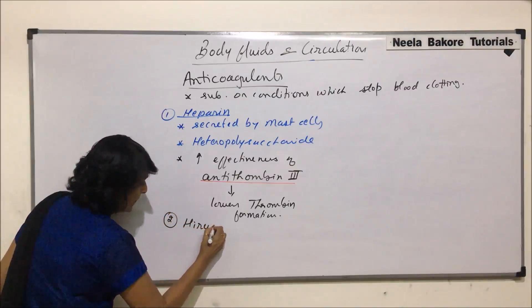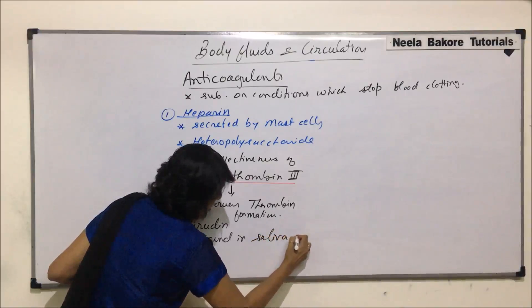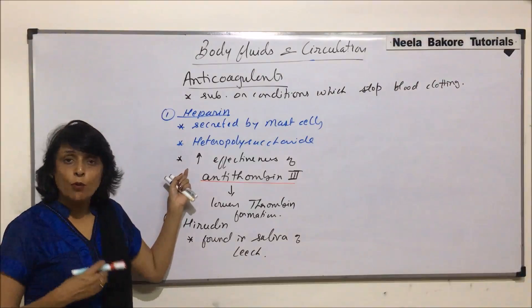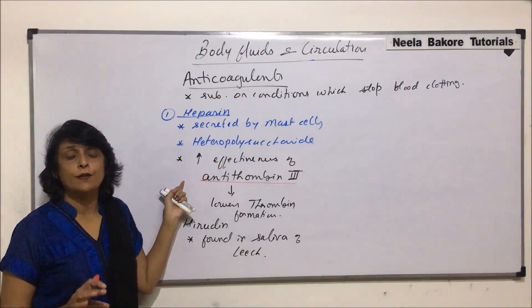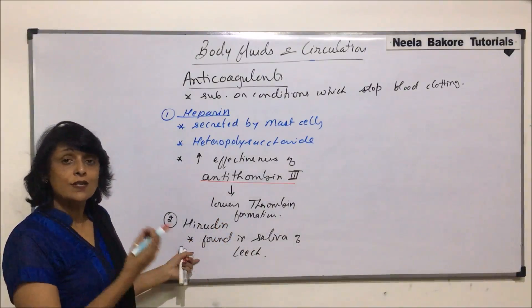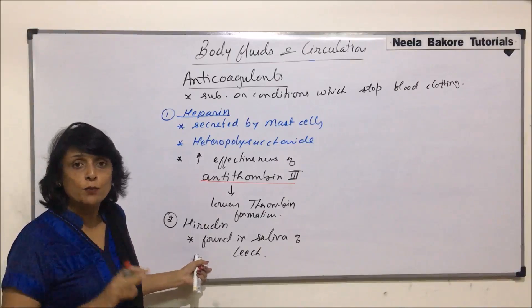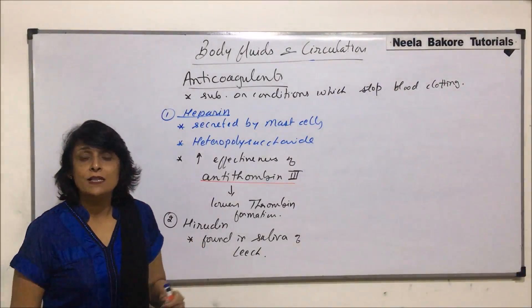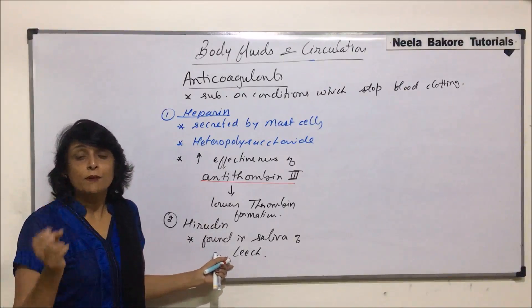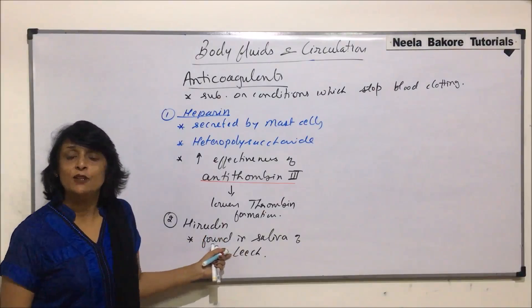The second anticoagulant is hirudin. It is found in the saliva of leeches and it also lowers or stops blood clotting. In our body, heparin keeps blood flowing in the vessels without clotting. Hirudin is used externally — for example, when a blood sample is taken for analysis, hirudin can be added to the sample to prevent it from clotting before the tests are performed.